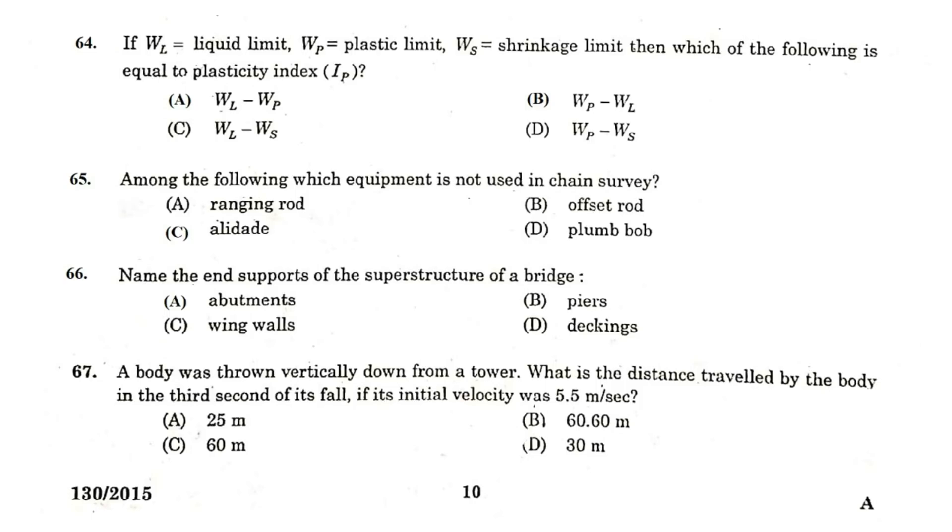If WL is equal to the liquid limit, WP is the plastic limit and WS is equal to the shrinkage limit, then which of the following is equal to the plasticity index IP? WL minus WP. Among the following, which equipment is not used in chain survey? Alidade. Name the end supports of the superstructure of a bridge. Abutments.